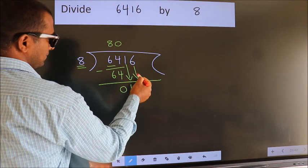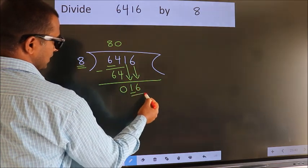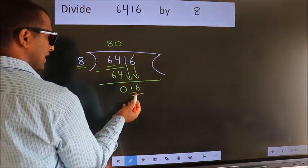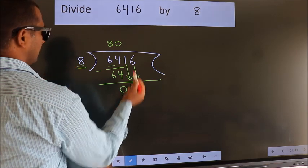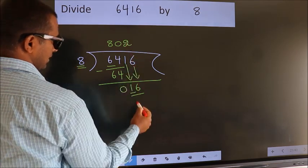Then only we can bring down this number. So, 16. When do we get 16? In 8 table. 8 2s, 16.